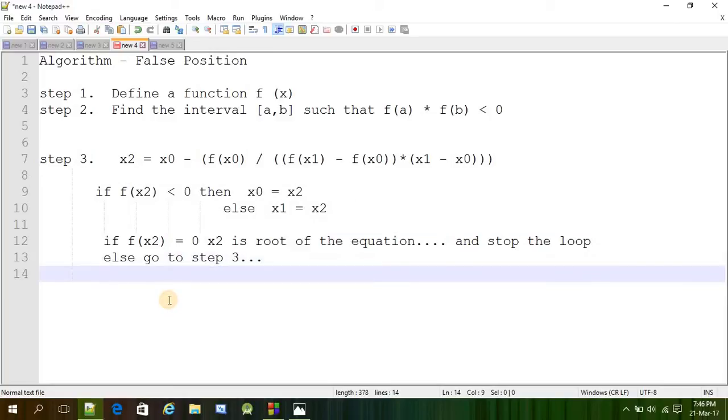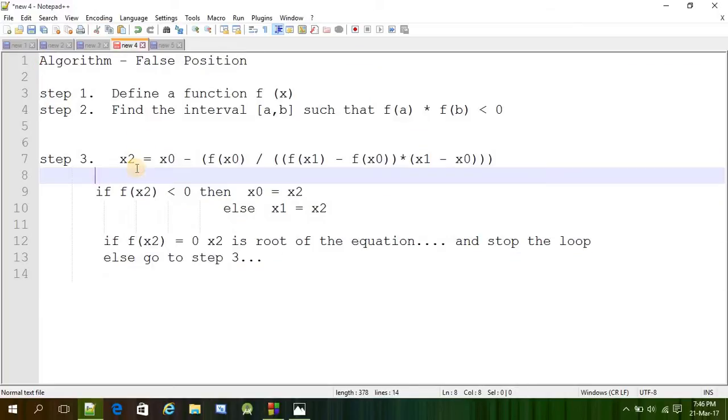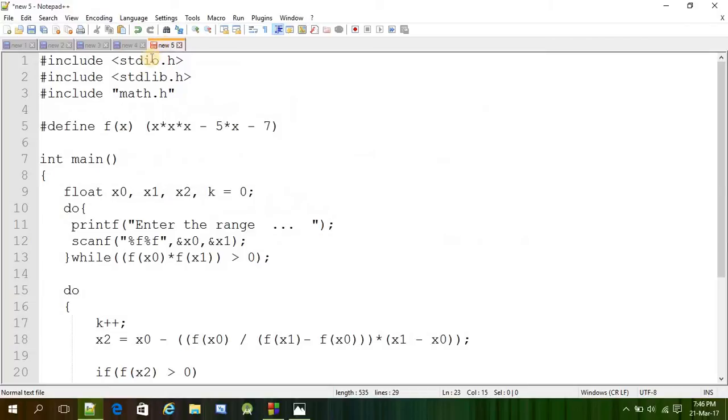And we are going to do the same thing again and again. So we can write a program in C language exactly doing the same thing. Let's say here is the program for regula falsi method. And here are our three header files. Here you need to include that math.h header file because we are going to use a function for absolute value. And then you can define any equation you want. Here I gave an equation x³ minus 5x minus 7. And then our main method.